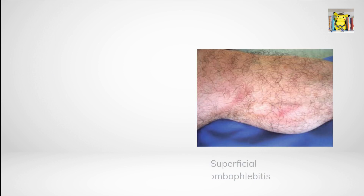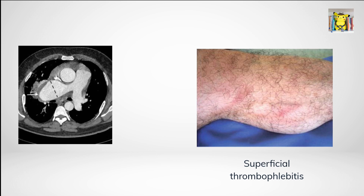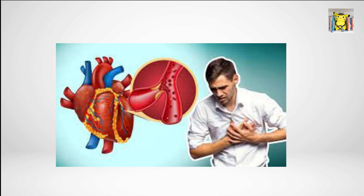Vasculitis can result in superficial thrombophlebitis, deep vein thrombosis (DVT), and potentially fatal pulmonary aneurysms, causing cough, dyspnea, and hemoptysis. It can affect any artery, leading to aneurysms, stenosis, or occlusion, and even acute myocardial infarction due to coronary artery thrombosis is rarely reported.